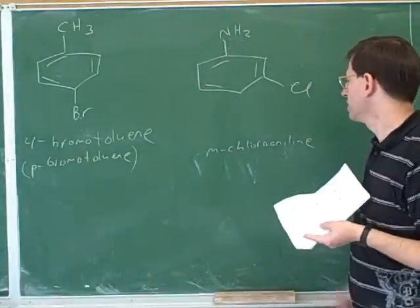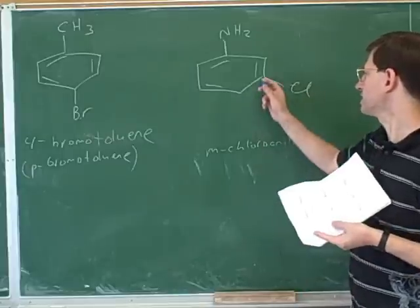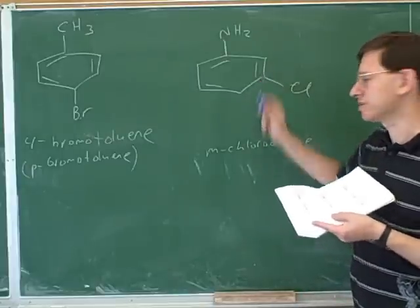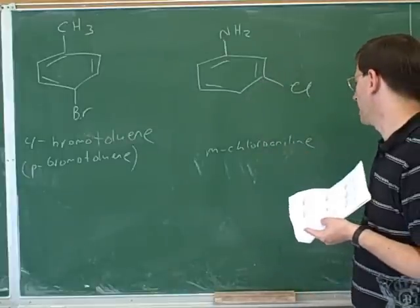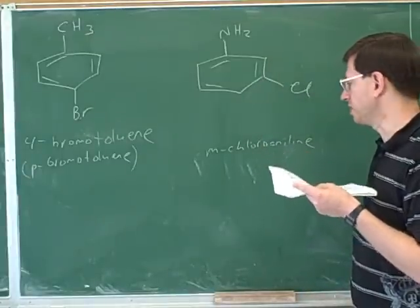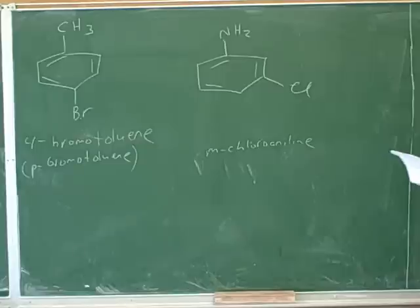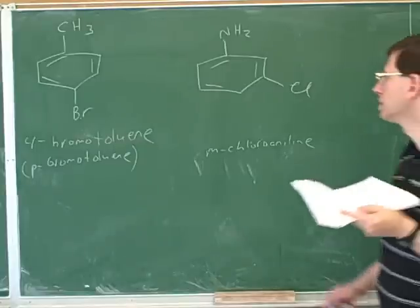Aniline, because of the NH2 group. Chloro is the substituent, and you're right, this is in the meta position, so m-chloroaniline. How about if we were going to use numbers? How would we name this? Three-chloroaniline.